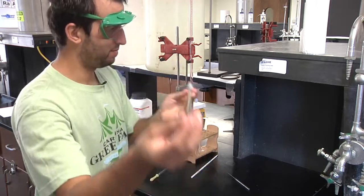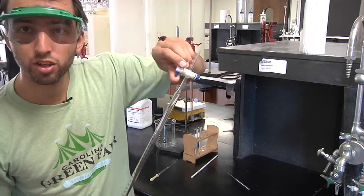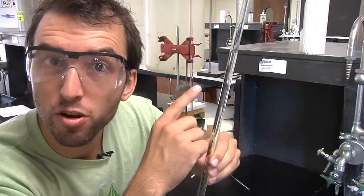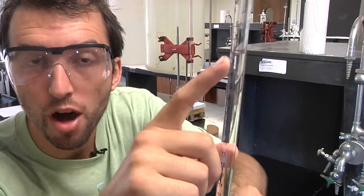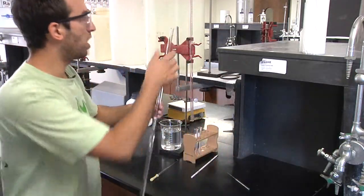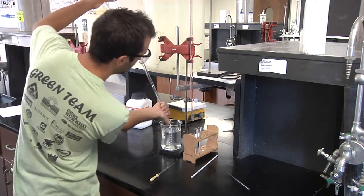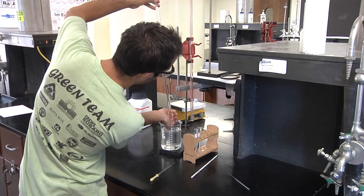Take your burette, make sure it's closed, and fill it with water. Now that your burette is filled with water, you want to put your thumb over it and invert it into your beaker.